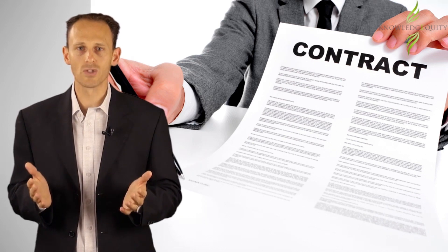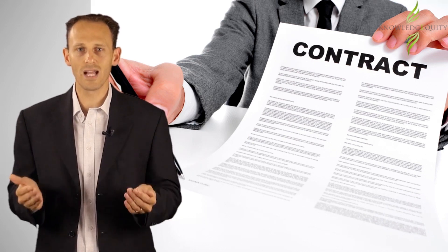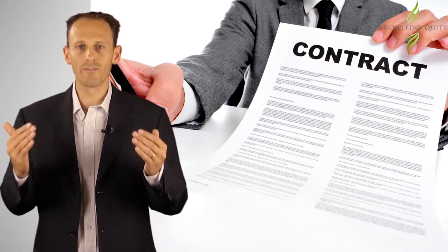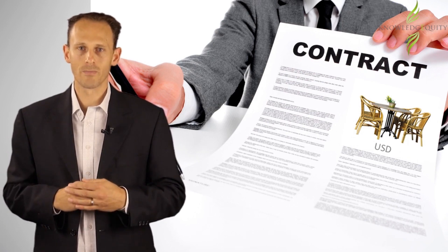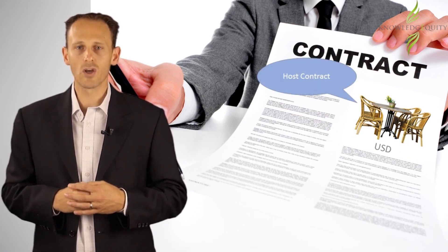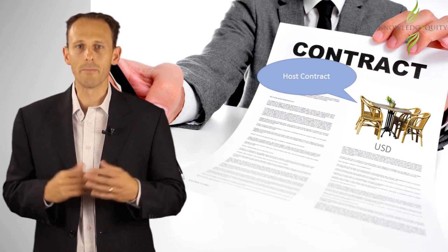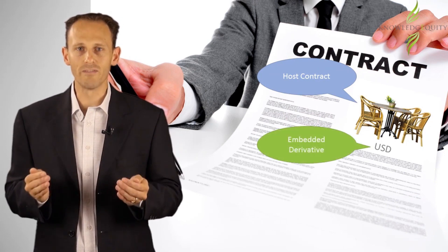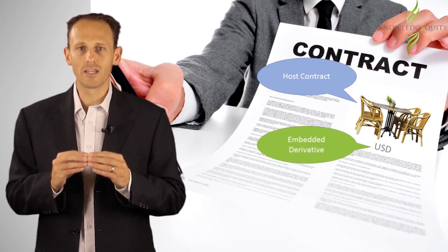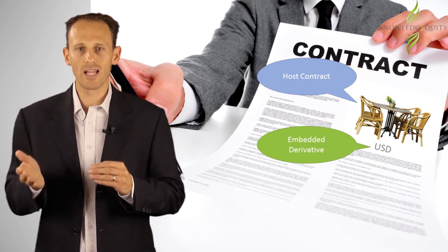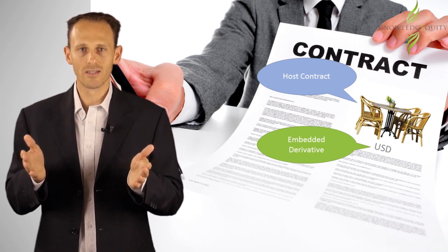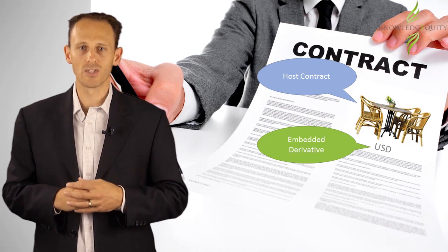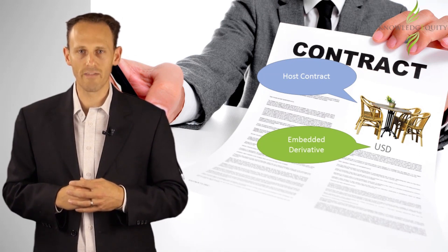Consider a business contract for an Australian organisation to export furniture priced in US dollars. The host contract is the contract to sell the furniture. The embedded derivative is the part of the contract that converts an Australian dollar host contract into US dollars, just like a forward exchange contract or FEC.